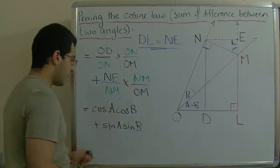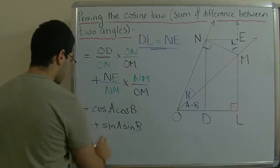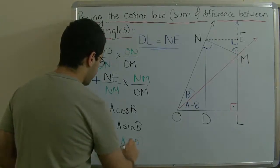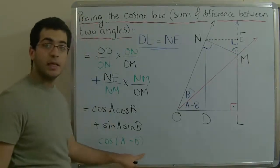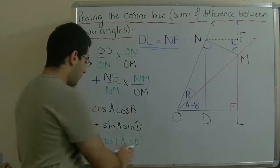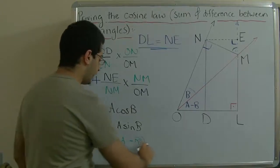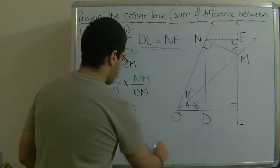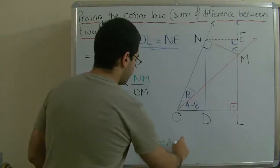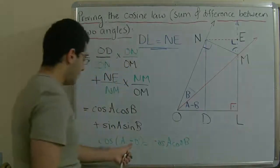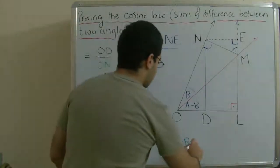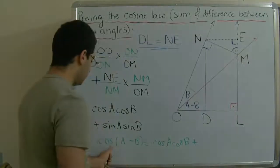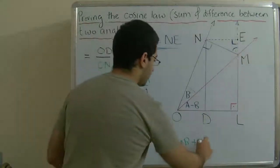So OD/ON is cosine A, ON/OM is cosine B, NE/NM is sine A, and NM/OM is sine B. This confirms our first rule: the cosine of the difference between two angles equals cosine A · cosine B + sine A · sine B. If we have a negative sign we put a positive, then sine A · sine B.